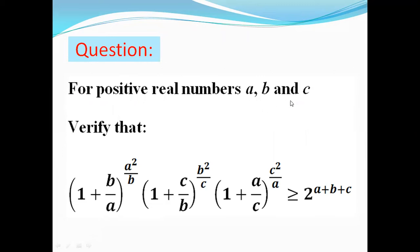If a, b, and c are positive real numbers, we have to prove that (1 + b/a)^(a²/b) multiplied by (1 + c/b)^(b²/c) multiplied by (1 + a/c)^(c²/a) is greater than or equal to 2^(a + b + c).